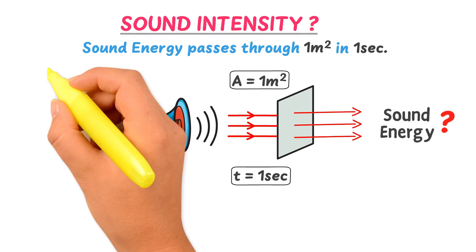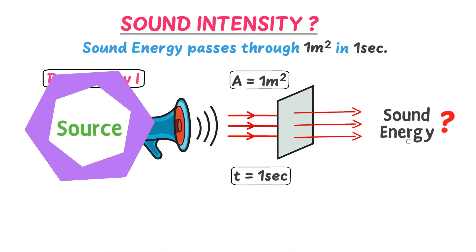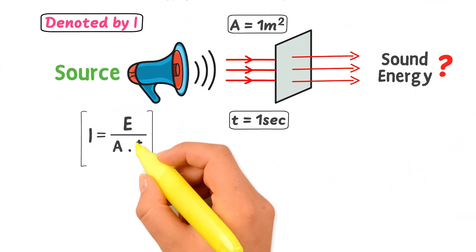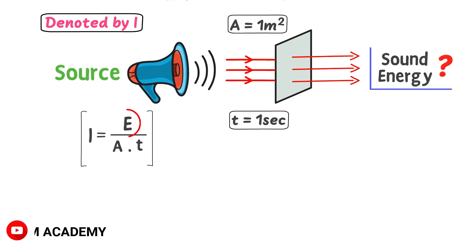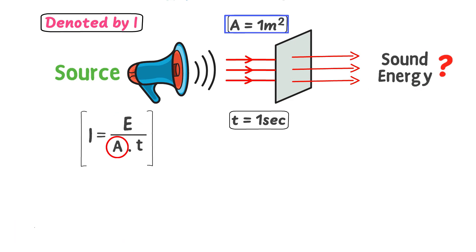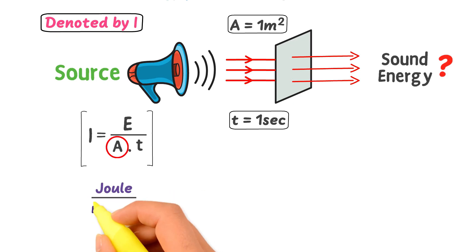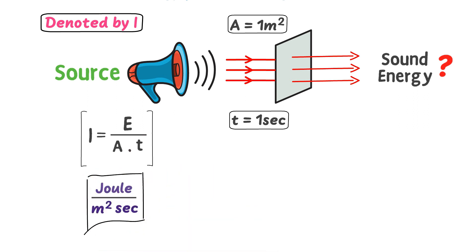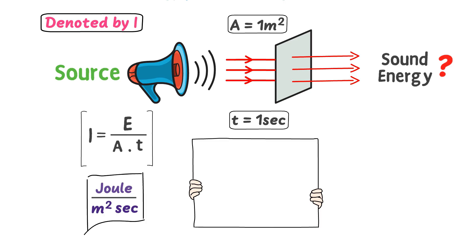Sound intensity is denoted by I. Mathematically, we write it as I equals E divided by A times T, where E is the sound energy that passes through unit area or 1 meter squared area A, and time T equals 1 second. The SI unit of sound intensity is Joule per square meter per second.